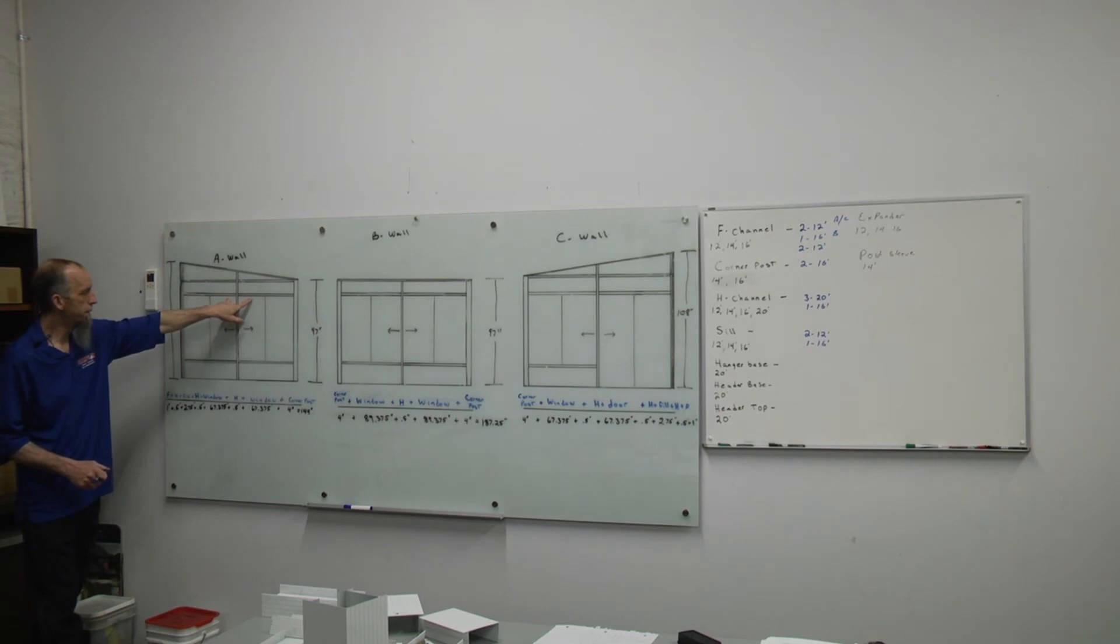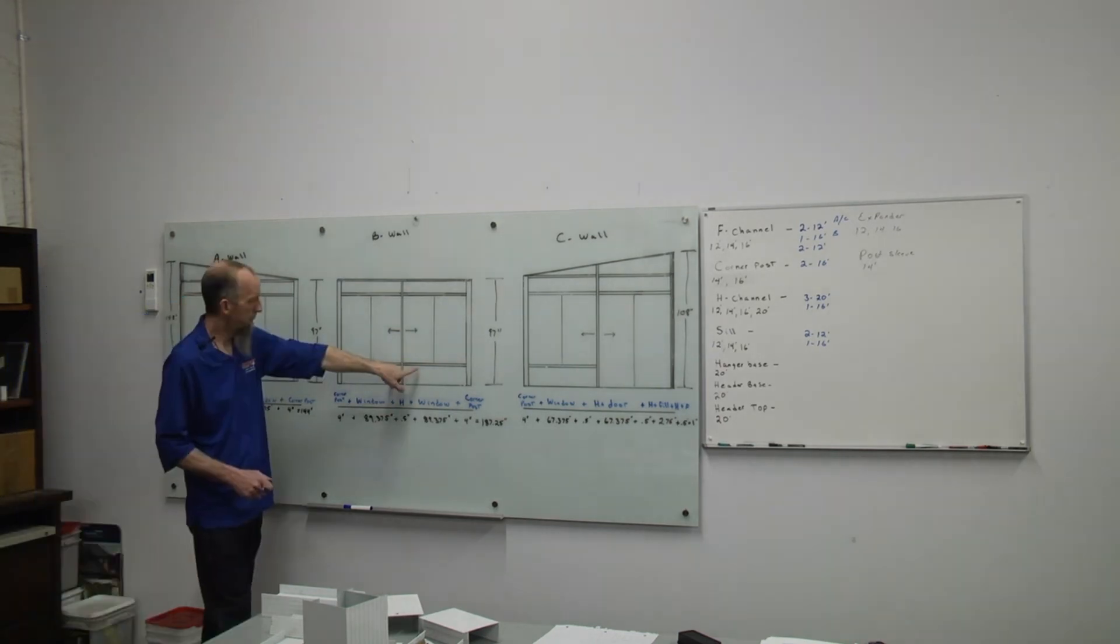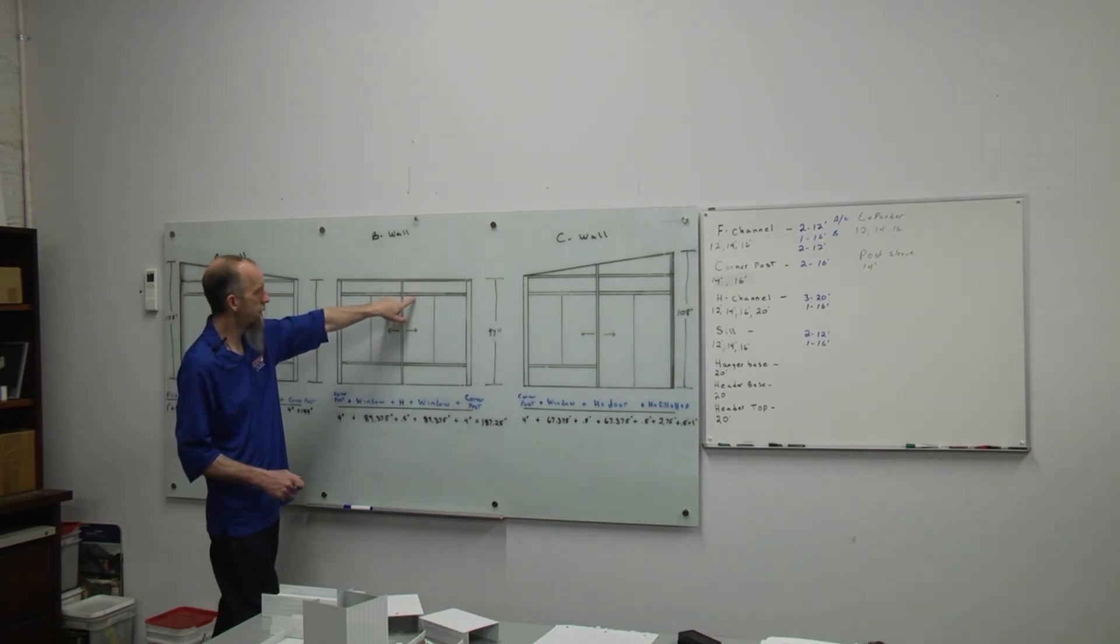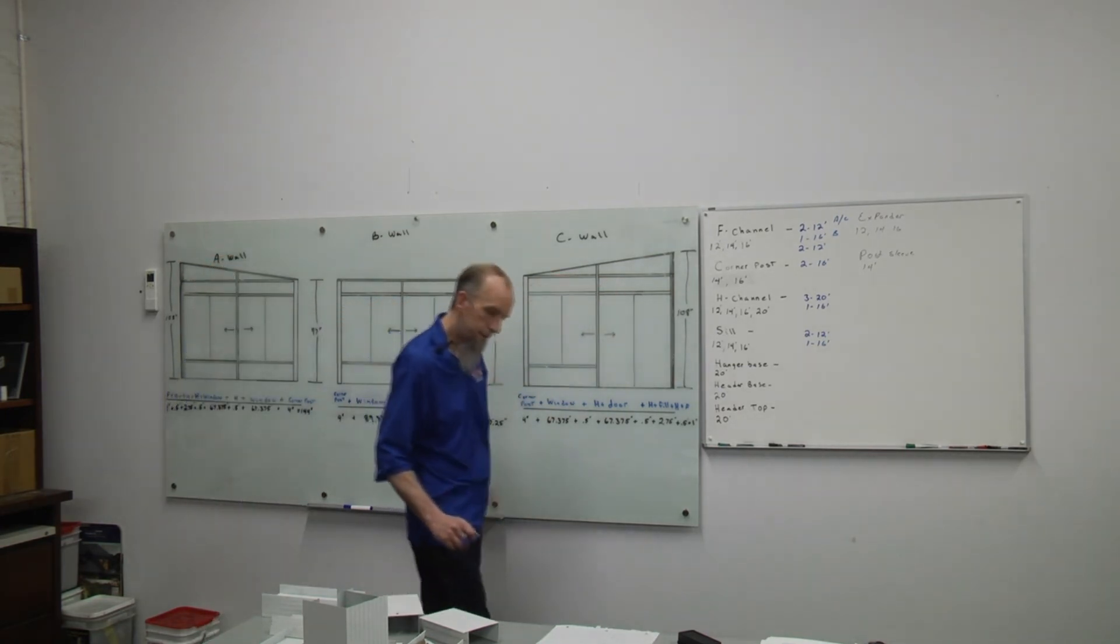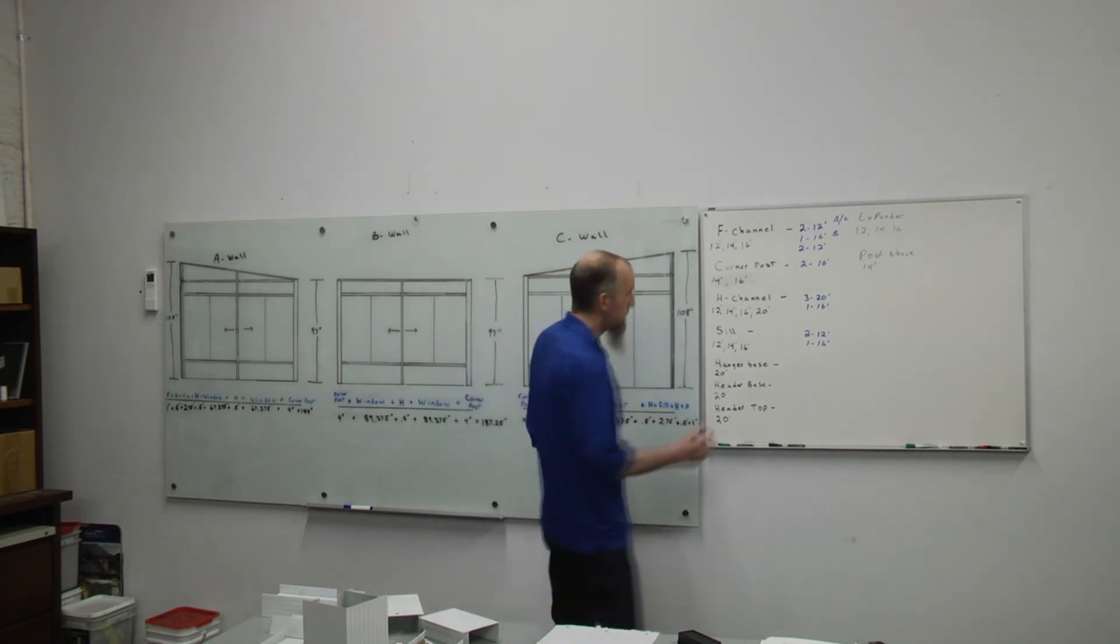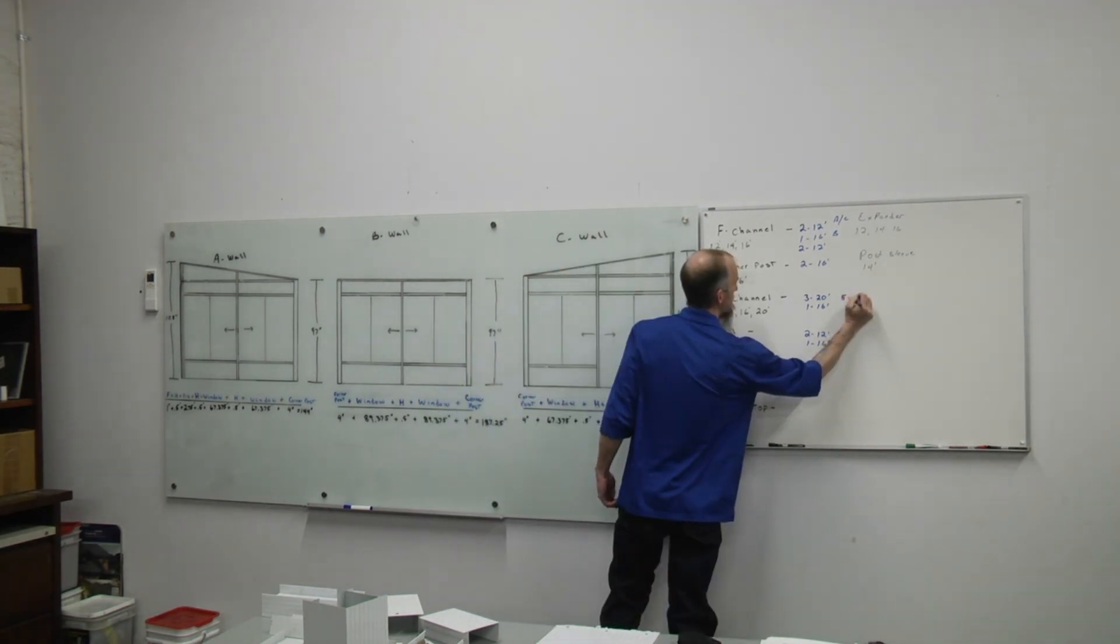Another 12 foot H will give me the two for above the window. And a 12 footer will give me the two for above the transom. B wall, we'll get these out of the 16. So for our horizontal H channels we'll need five 12 foot.